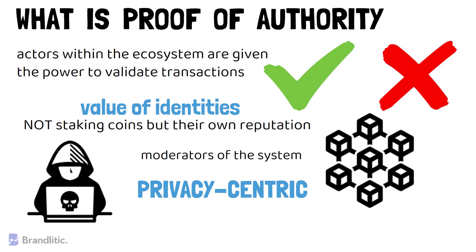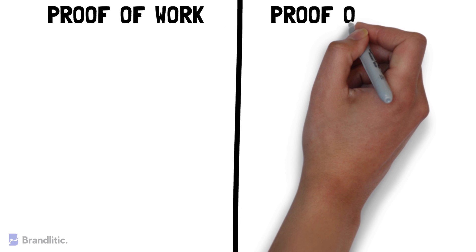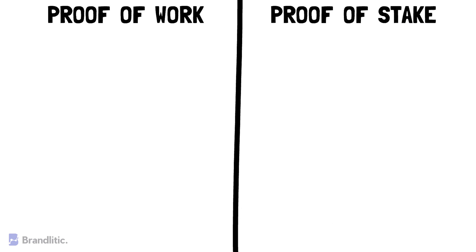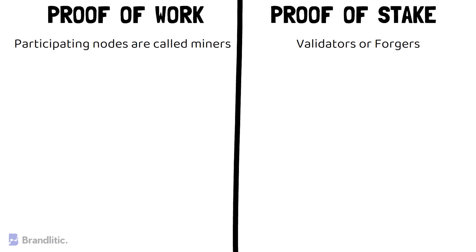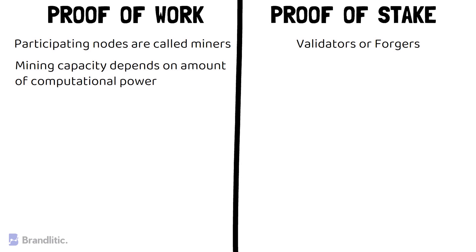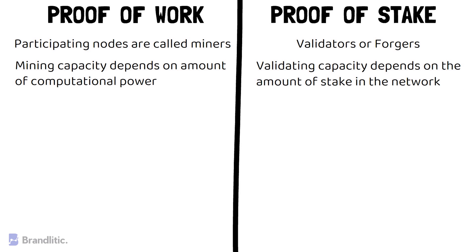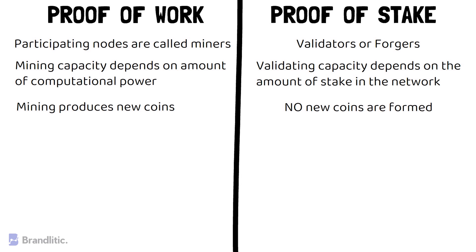So far we've understood the individual meanings of all three consensus mechanisms. Let's conduct a quick comparison. Proof-of-Work vs. Proof-of-Stake: in Proof-of-Work, participating nodes are called miners, whereas in Proof-of-Stake, participating nodes are called validators or forgers. In Proof-of-Work, mining capacity depends on the amount of computation power, whereas in Proof-of-Stake, validating capacity depends on the amount of stake you hold in that network. In Proof-of-Work, mining produces new coins, but no new coins are formed in Proof-of-Stake.